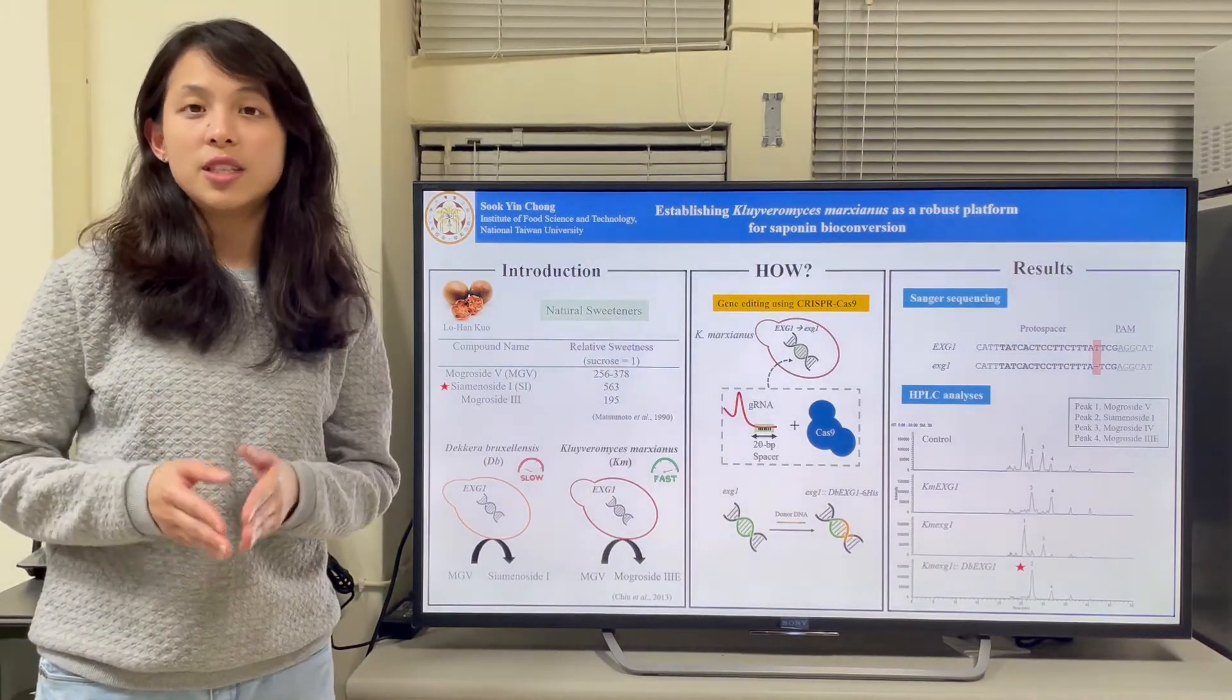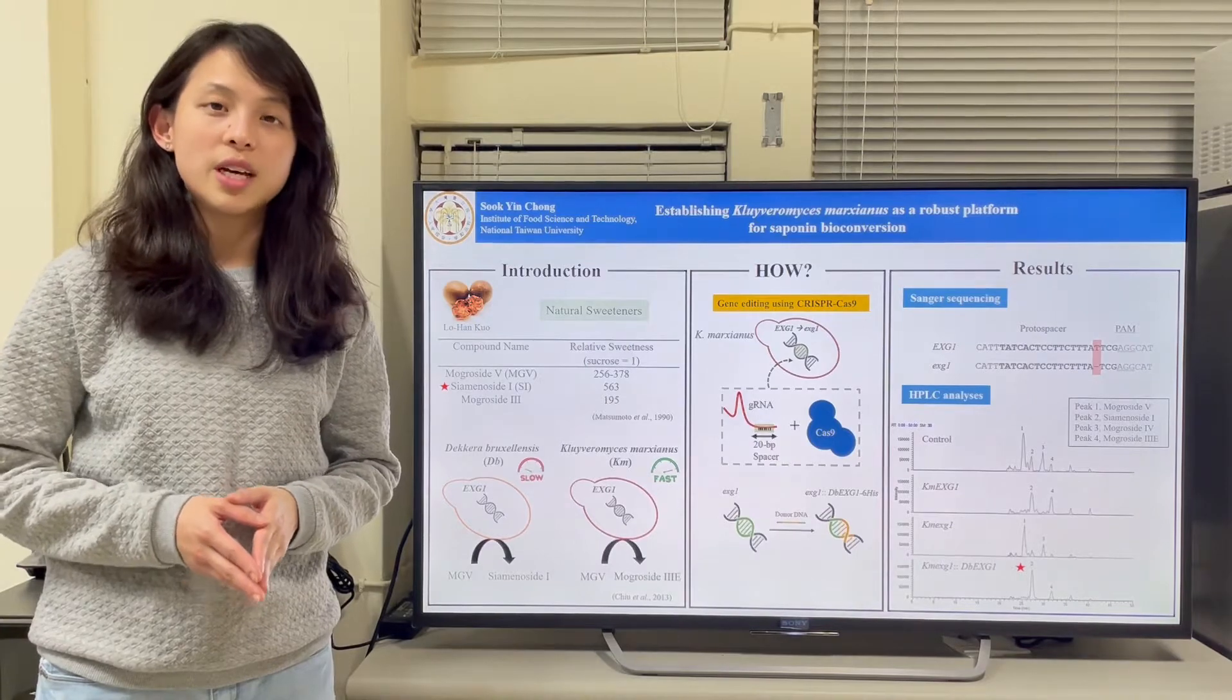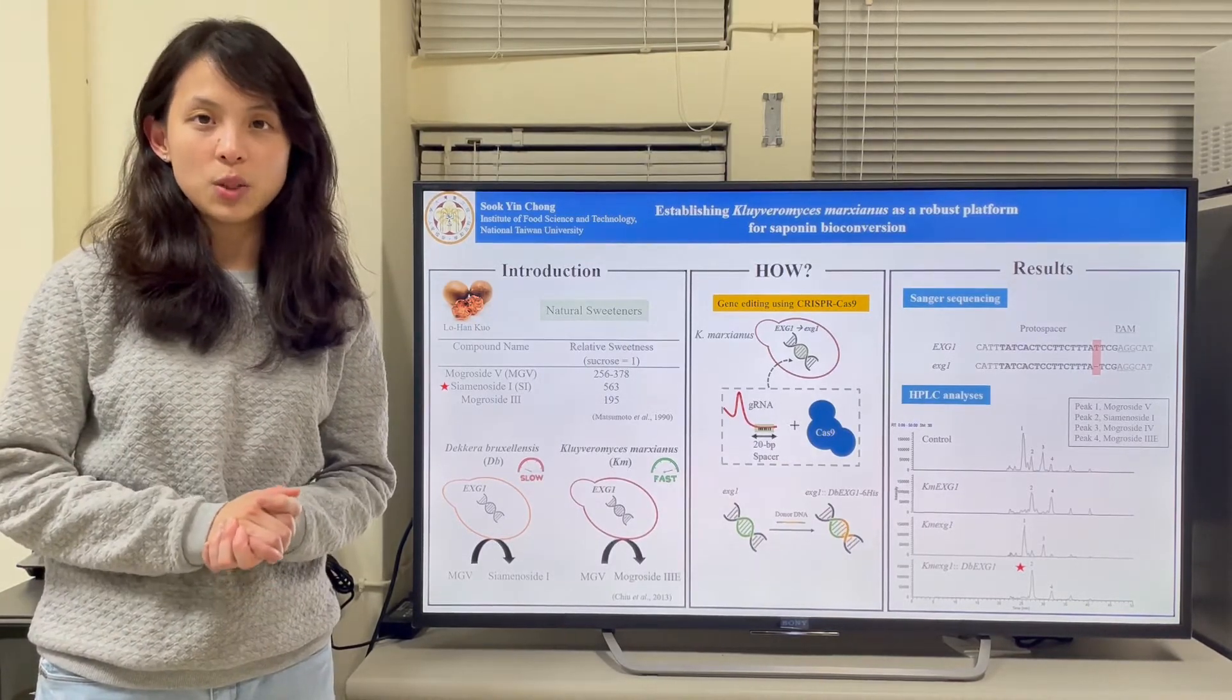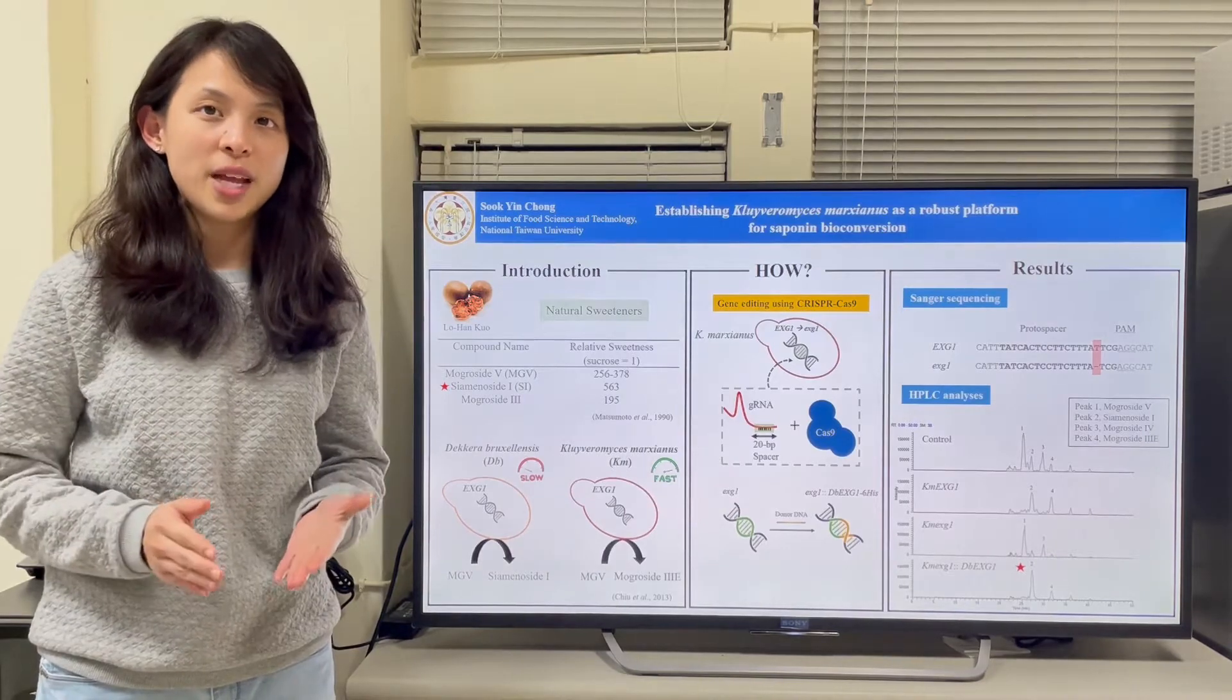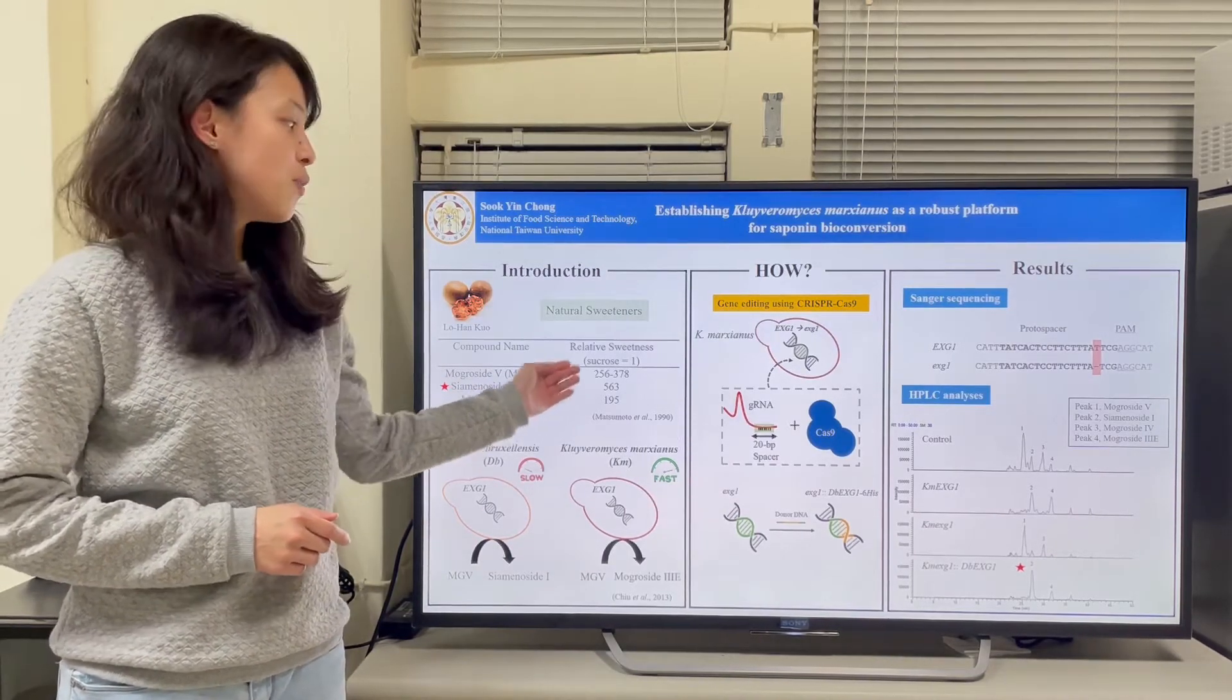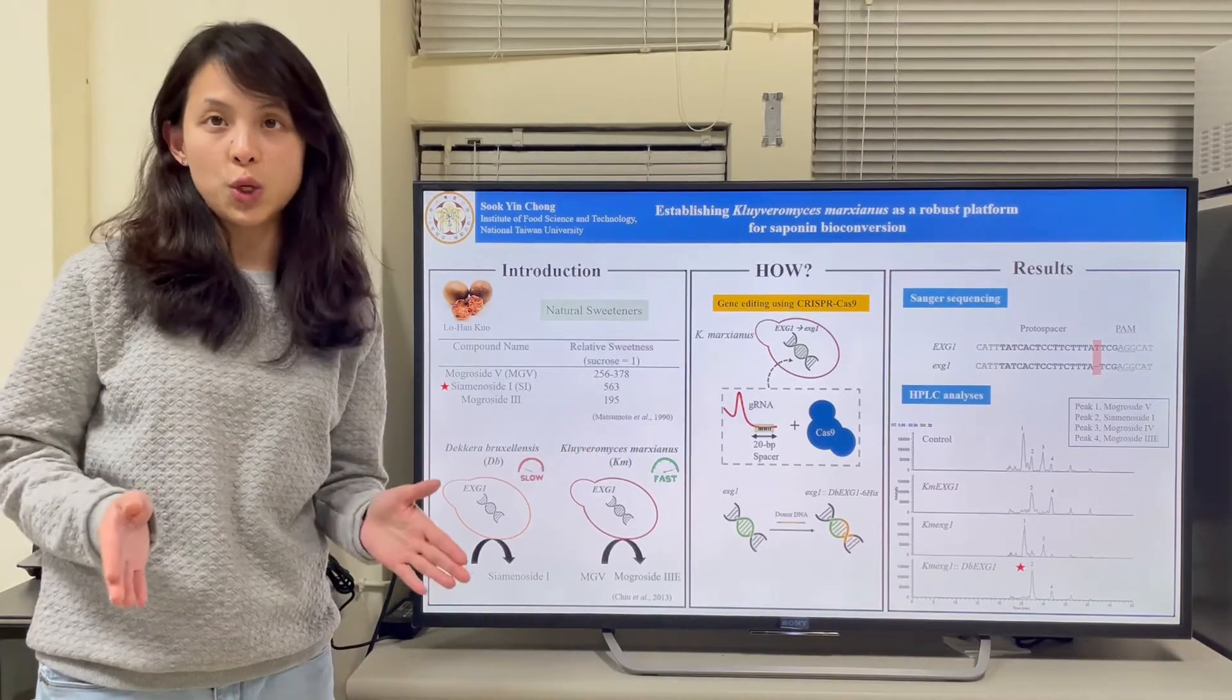Different mogulcides carry different numbers of sugar molecules, resulting in different levels of sweetness, and some mogulcides are suitable to be used as natural sweeteners. Seminolcide 1 is one of the sweetest mogulcides, and it is 563 times sweeter than sucrose.